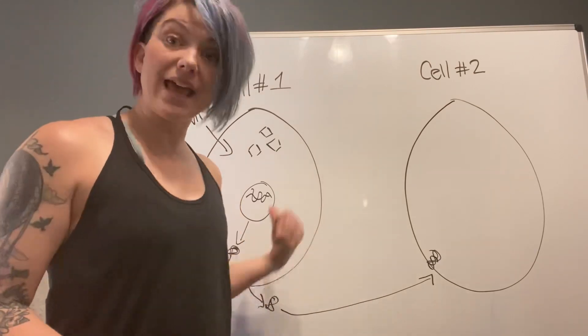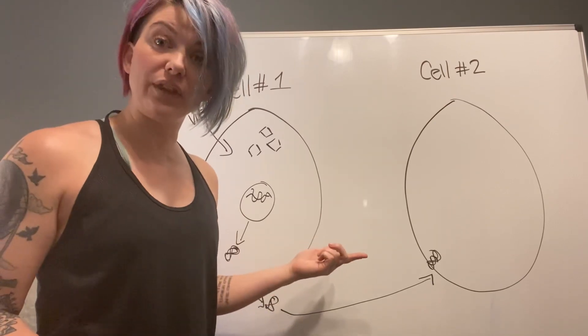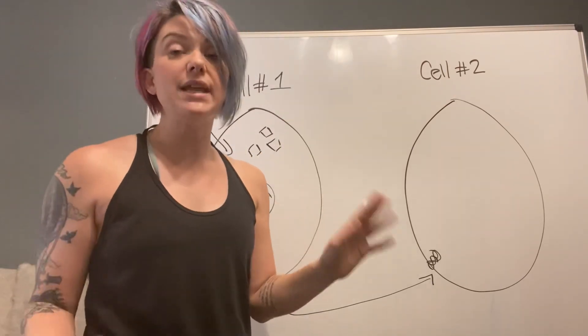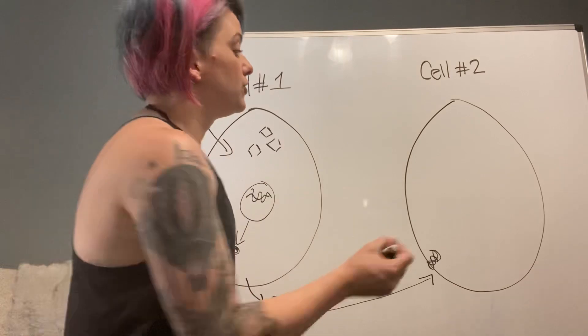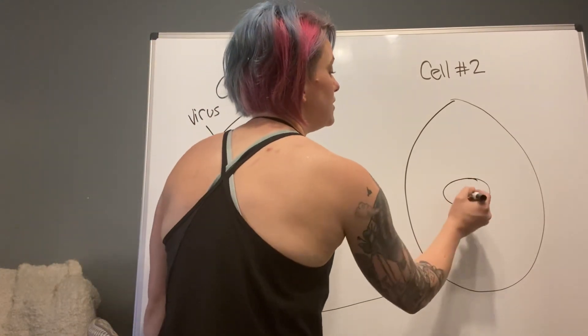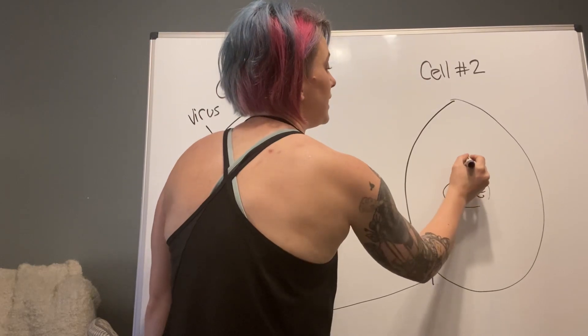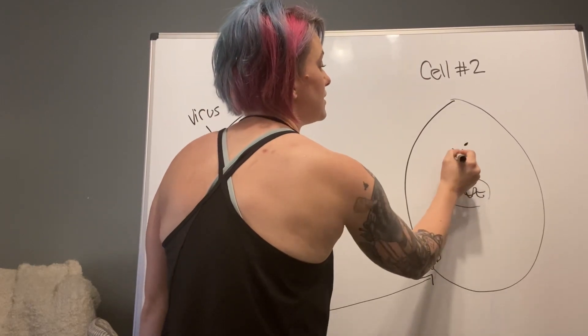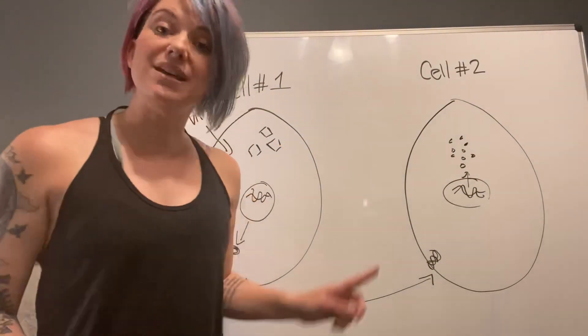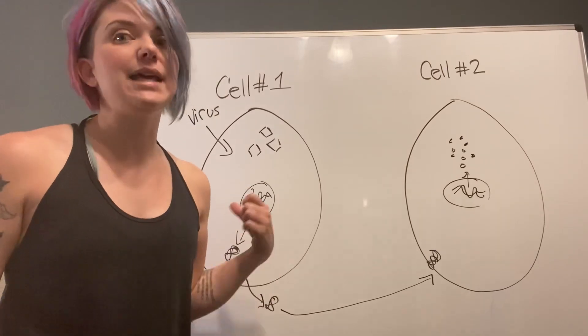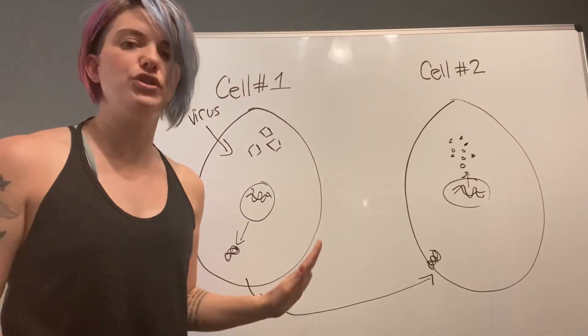When this cell gets a sense that there's interferons out there, he knows, okay, something's going down, I need to get ready for it. So what happens in his nucleus with his DNA, he starts making antiviral proteins. Because he got the signal from his buddy friend, hey, there's a virus around, you should get ready for it.